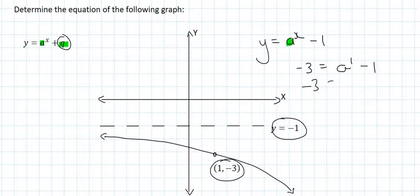And so minus 3 is equal to A to the power of 1, which is just A minus 1. You then take the minus 1 over to the other side, where it will become positive. And so A is going to be equal to negative 2.